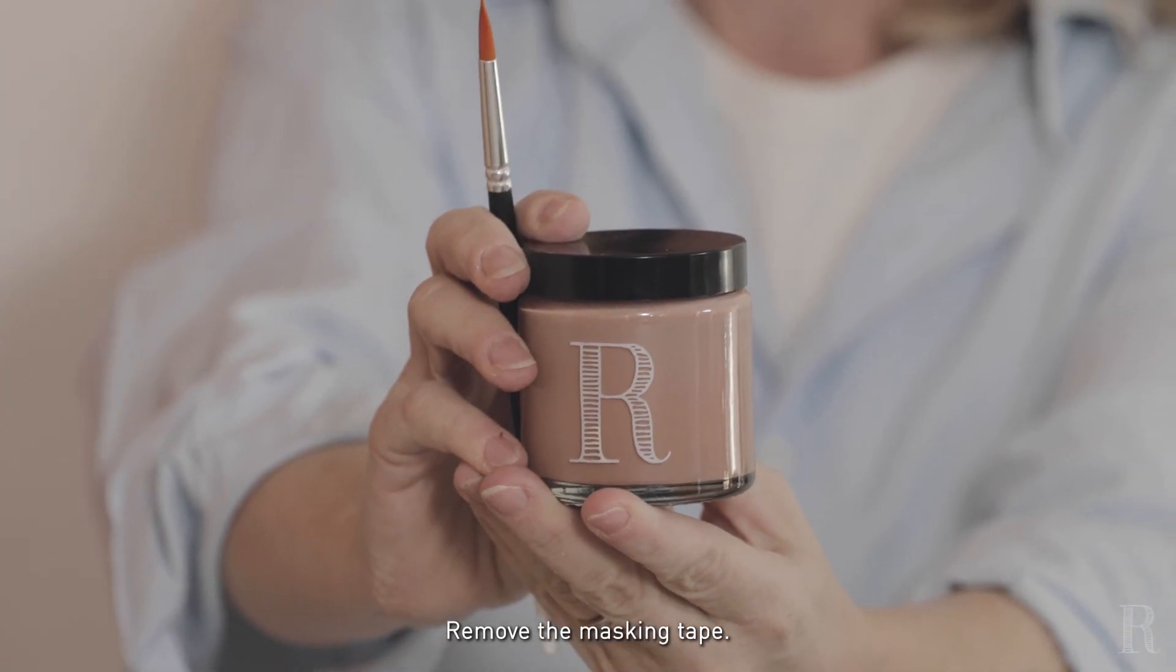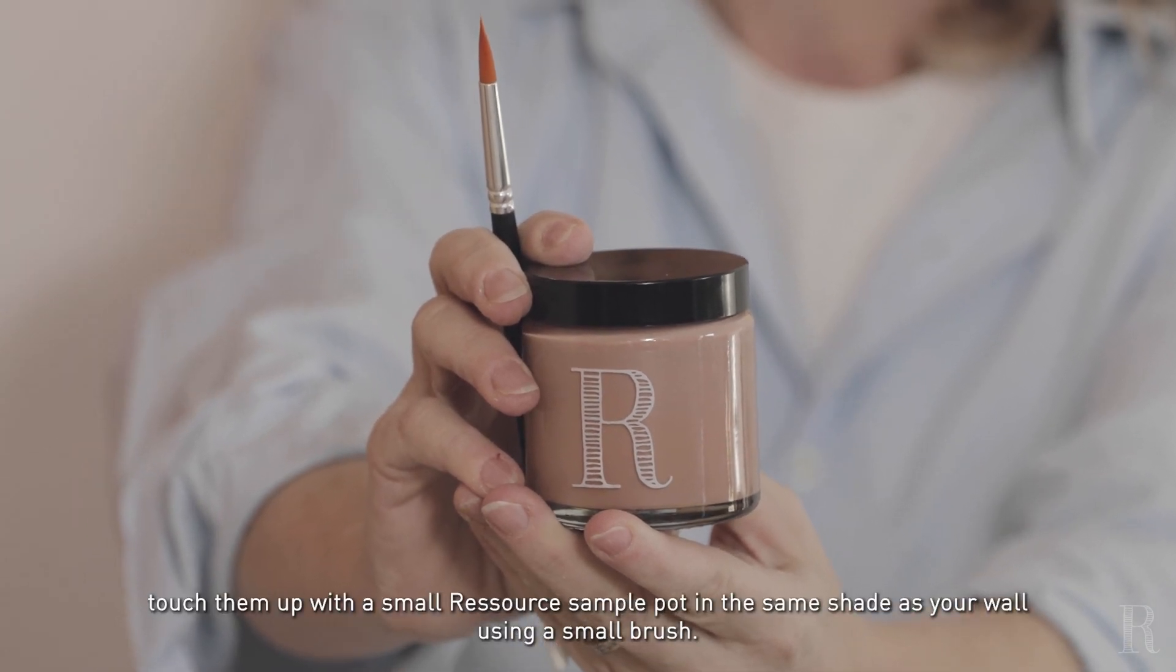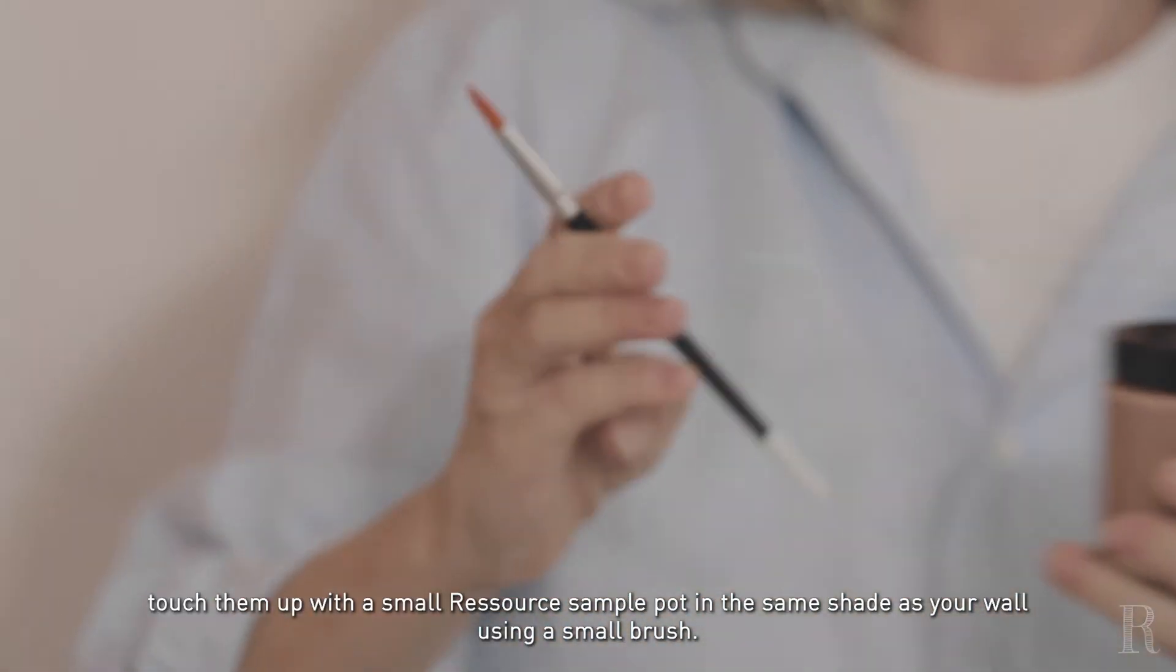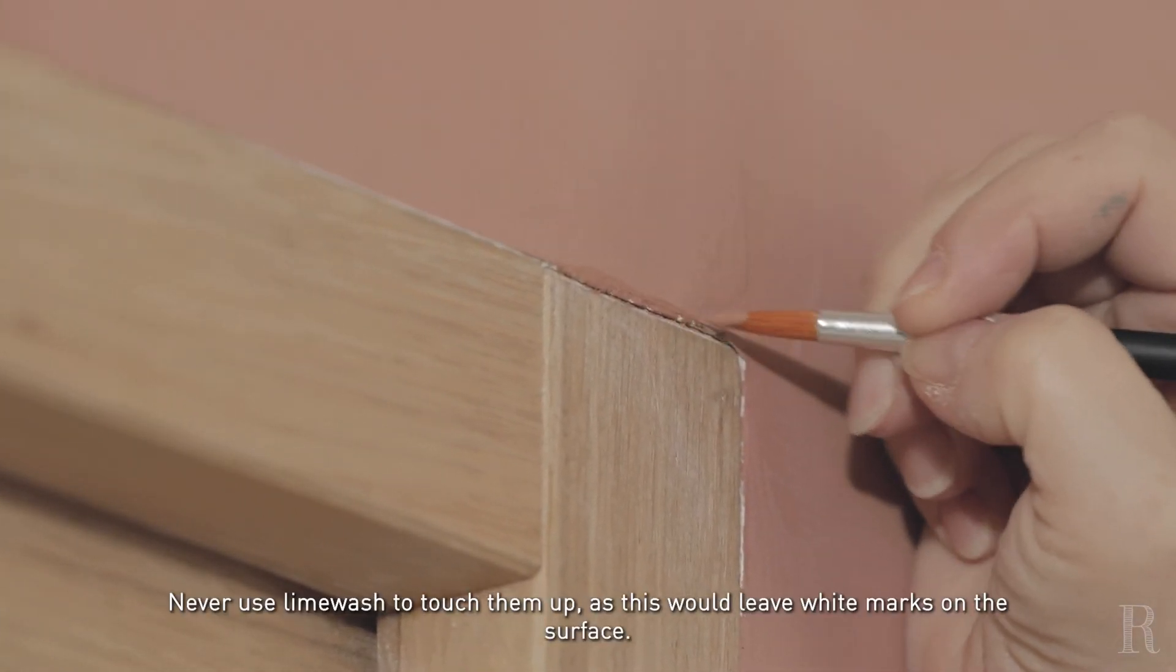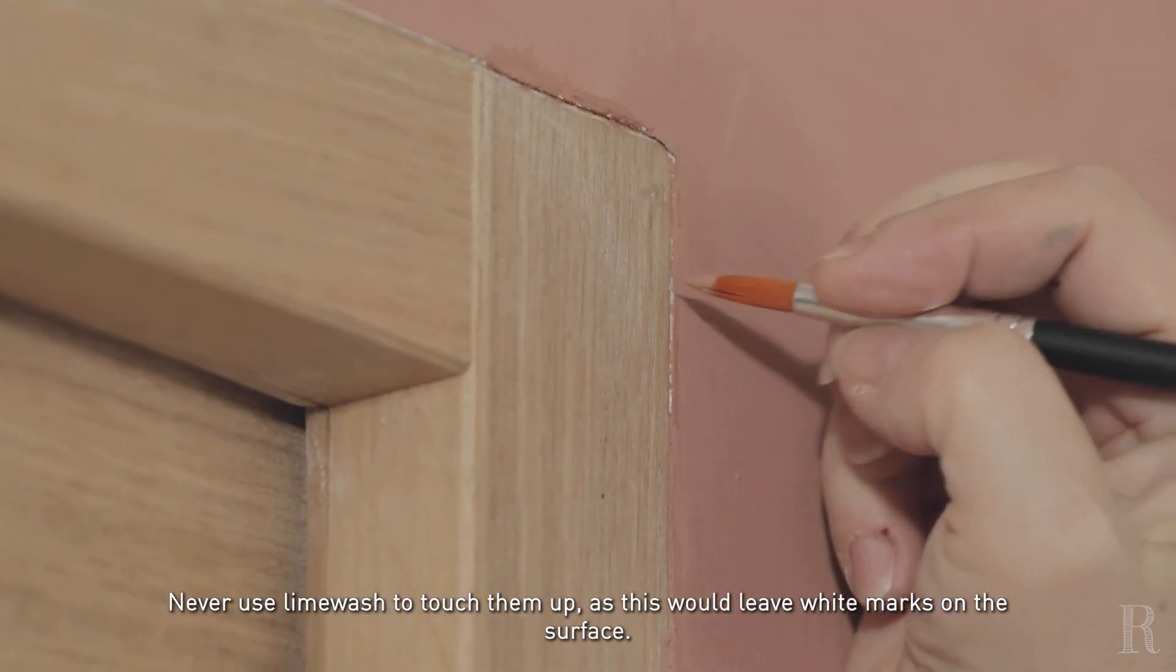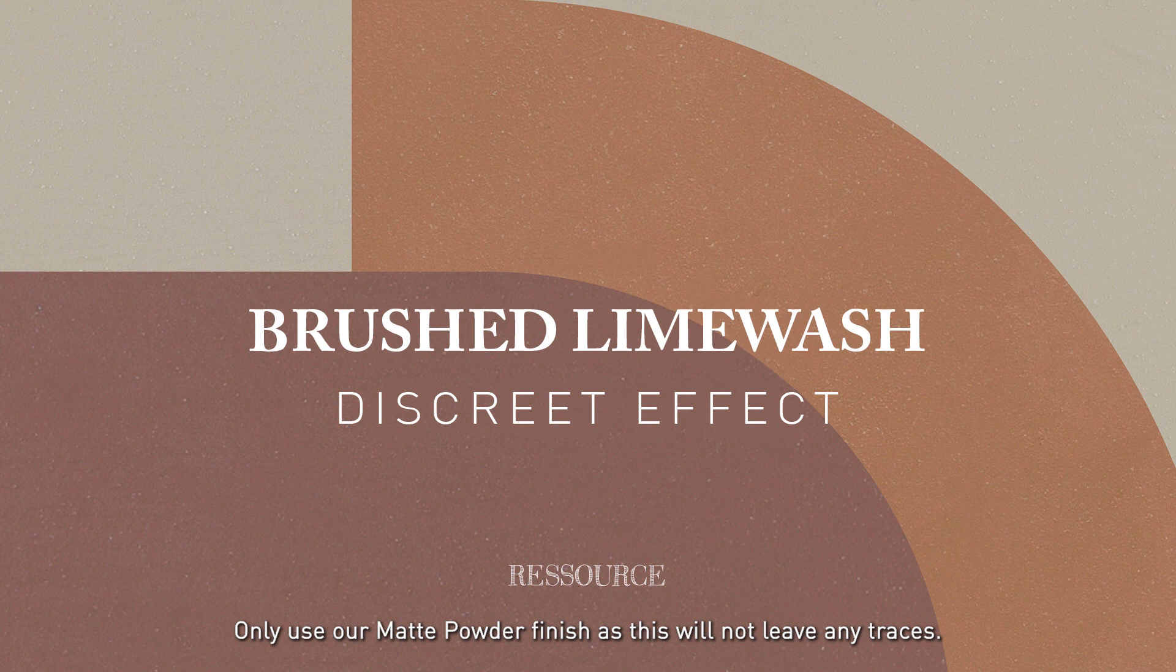Enlevez les rubans adhésifs de masquage. Si vous constatez des manques, réalisez les retouches à l'aide d'un petit pinceau et d'un pot de finition dans la même teinte que votre mur. N'utilisez jamais la chaux qui laisserait des traces blanches pour réaliser les retouches. Seule notre finition mat poudré ne laissera pas de traces.